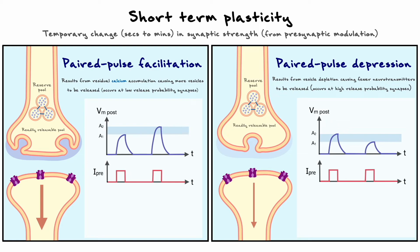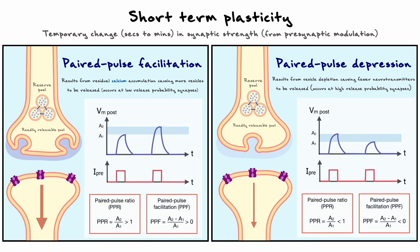In mathematical terms, we can quantify the amount of paired pulse facilitation, or paired pulse depression, from the paired pulse ratio and paired pulse facilitation metrics. In the paired pulse ratio, we take the ratio of the second amplitude over the first. In cases of facilitation, the ratio will be above 1 and in cases of depression, the ratio will be below 1.